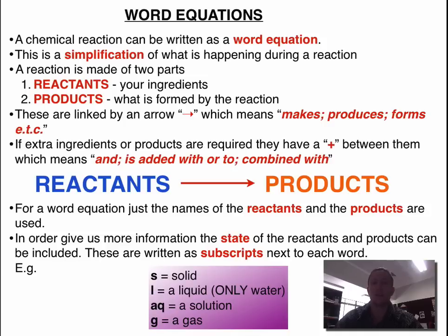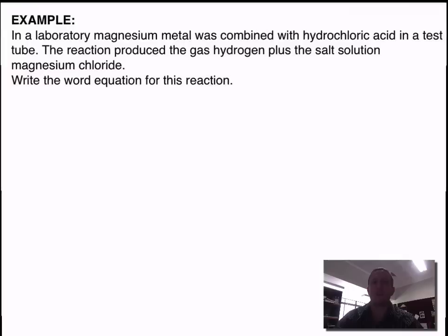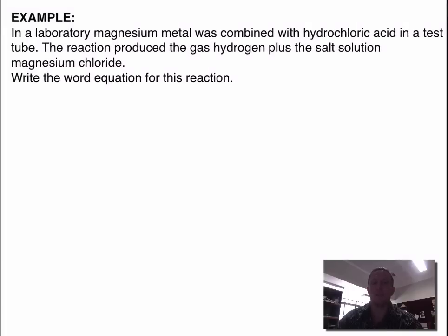So that's all the theory. Let's have a look at how we put it together. In this example, we've got some magnesium metal, which has been combined with hydrochloric acid in the test tube.